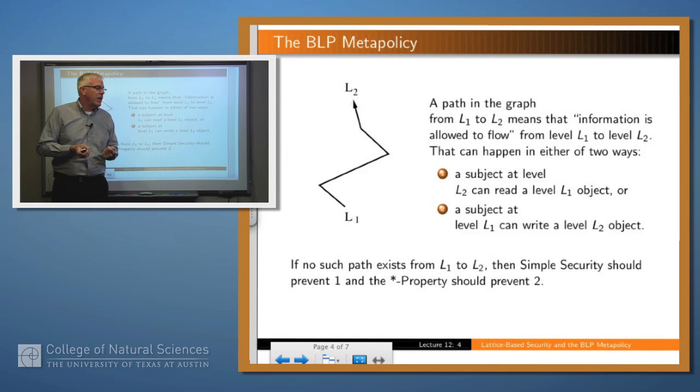So what does it mean? Well, if you think about it, a path within this graph from, say, L1 to L2, as you see here, what does that mean? It means that L2 dominates L1, but it also means something sort of operationally in terms of Bell and LaPadula. It means that information is allowed to flow from L1 up to L2. So how can it flow? Well, it can flow in one of two ways, according to Bell and LaPadula. Either L2, which is the higher level, can read an object at level L1 and thereby pull the information up, or a subject at L1 can push the information up to L2 by writing an object at the higher level.